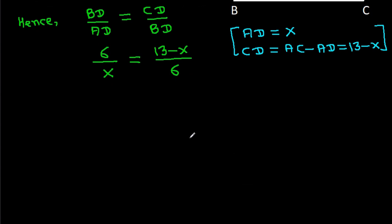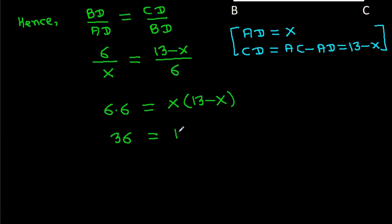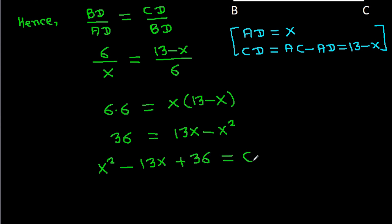If we cross multiply, then 6 times 6 will be equal to X times (13 minus X). That gives 36 equals 13X minus X squared, so X squared minus 13X plus 36 equals 0.